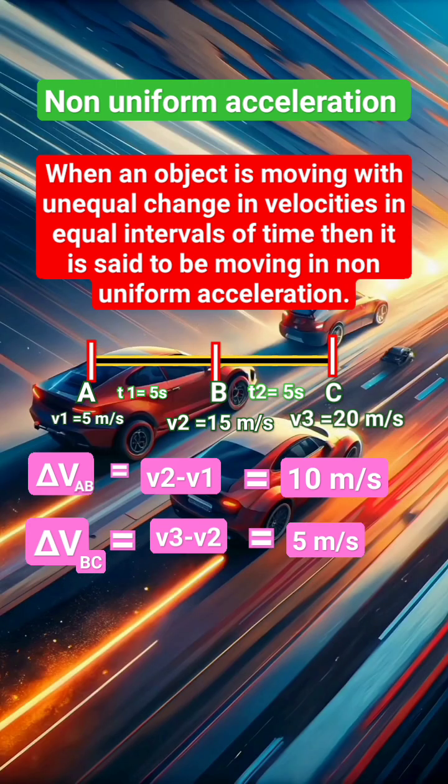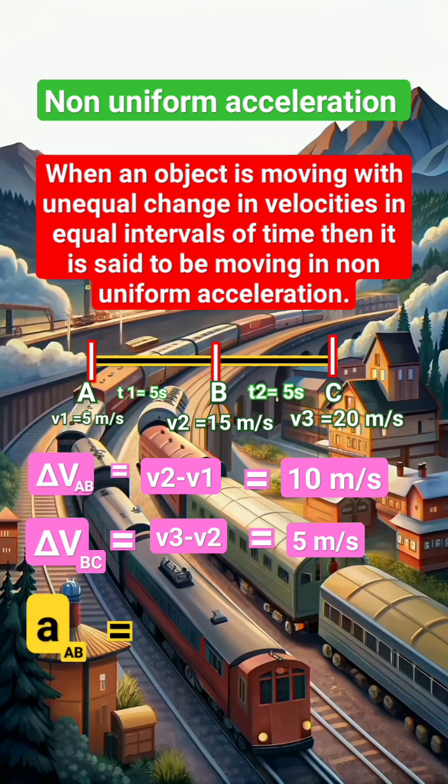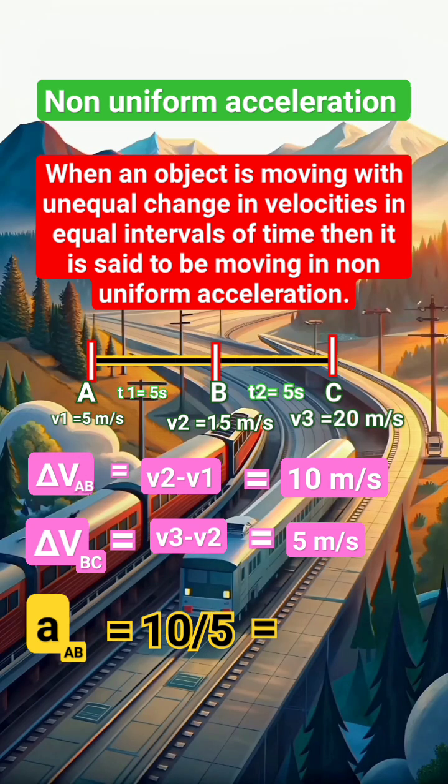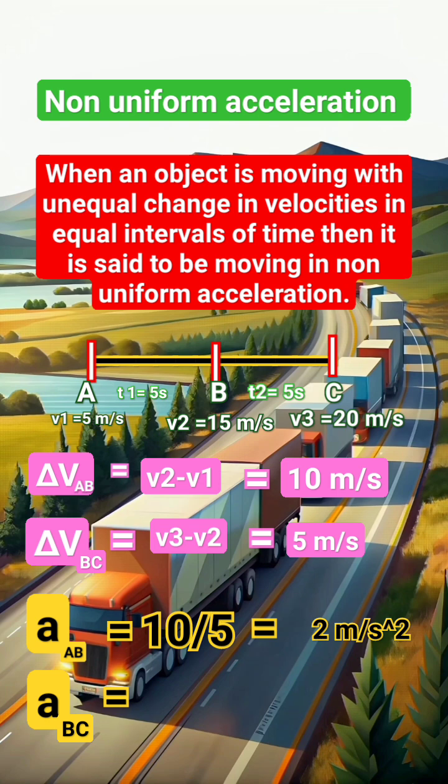And the time interval between A and B and B and C are same. Both are 5 seconds. Let's find out the change in velocities between A and B and B and C. We got 10 meters per second and 5 meters per second.